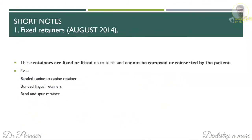As a short note in this topic, fixed retainers was asked. A fixed retainer is one that is fixed or fitted onto the teeth and cannot be removed or reinserted by the patient. Examples of fixed retainers include banded canine-to-canine retainers, bonded lingual retainers — the most commonly used — and a band and spur retainer.